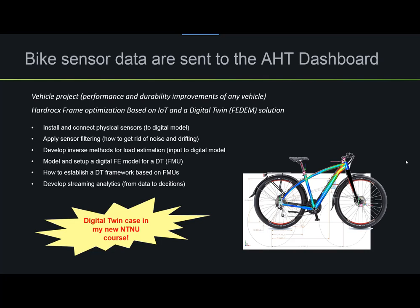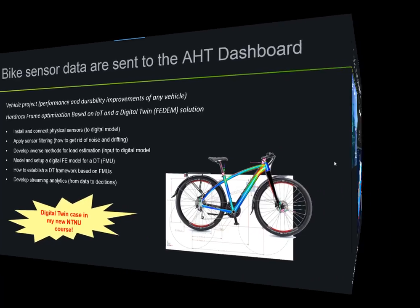In this example, we use the Arrowhead Tools dashboard to display data from the bike during ride and handling. We can display velocities, accelerations, the frame angles, and also stresses and strains from the bike frame. This example is also a case in a new NTNU course.